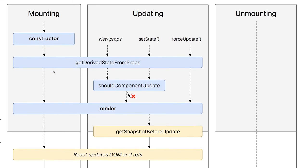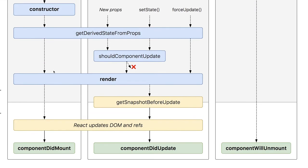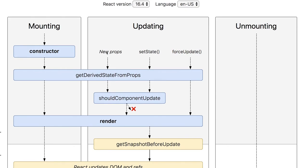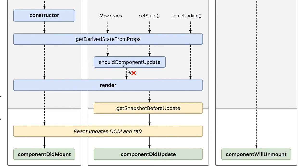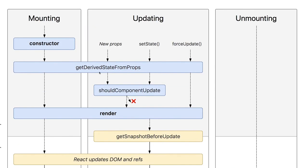Mounting is fine: constructor, getDerivedStateFromProps, render, componentDidMount — clear. Now if you do some kind of state update from any of these methods, like componentDidMount, then new props or new state is getting set, so it is again going to call getDerivedStateFromProps. This will get the new props if there is a parent component, otherwise it gets the new state. Then we have shouldComponentUpdate, which decides whether to re-render or not. If it returns true, render is called, then getSnapshotBeforeUpdate, then componentDidUpdate.